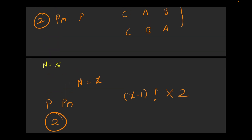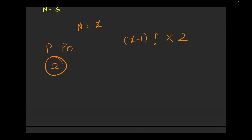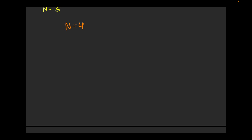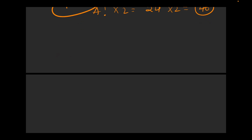The total answer is (n-1)! × 2. For n=4: 3! × 2 = 6 × 2 = 12 total ways. For n=5: 4! × 2 = 24 × 2 = 48 total ways. So there are 48 ways to arrange 5 members in a roundtable conference under this condition. I hope you understood the intuition and approach to solve this problem.